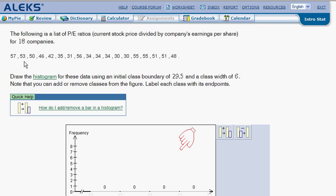Now notice they want us to take these numbers and draw a histogram for these data using an initial class boundary of 29.5 and a class width of 6. We're going to have to stop and interpret a little bit what they want here.